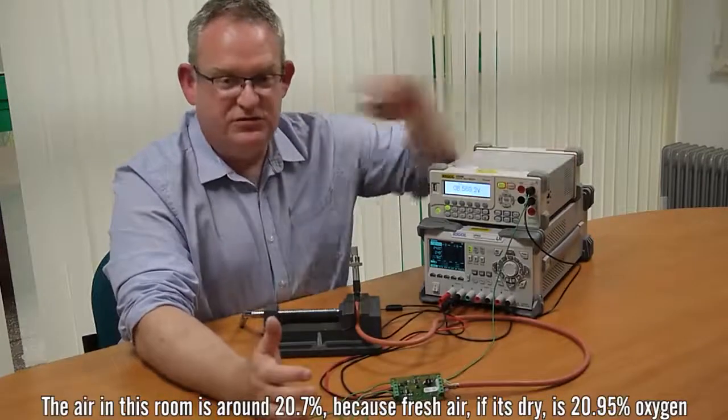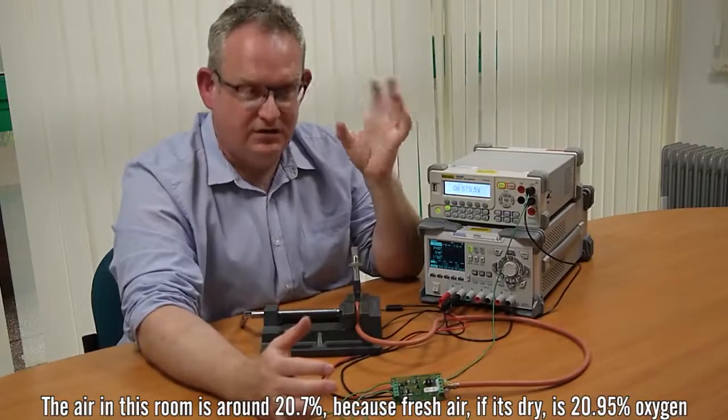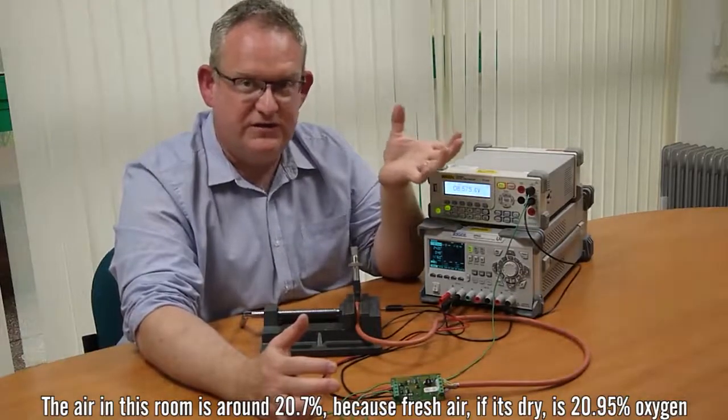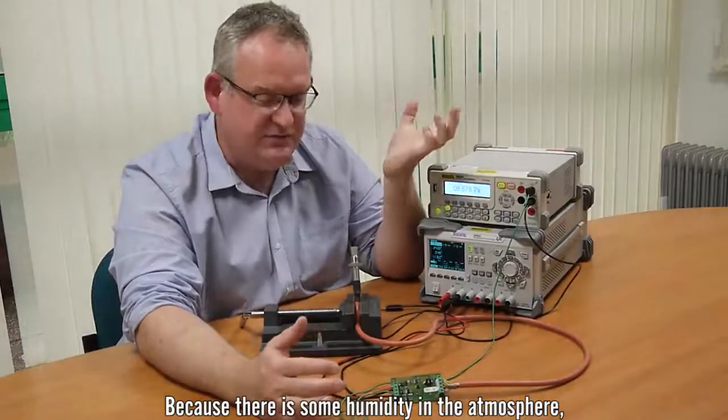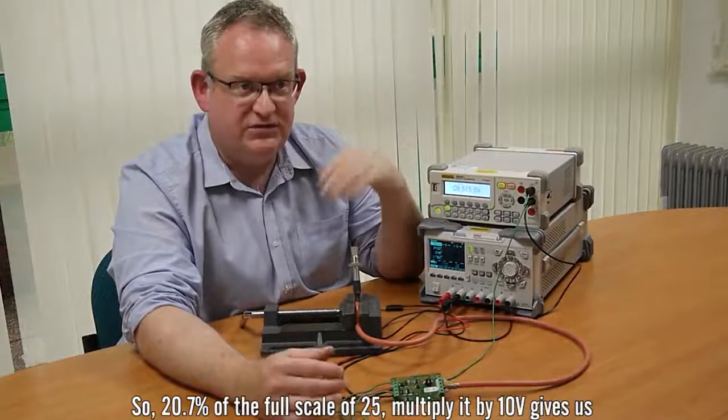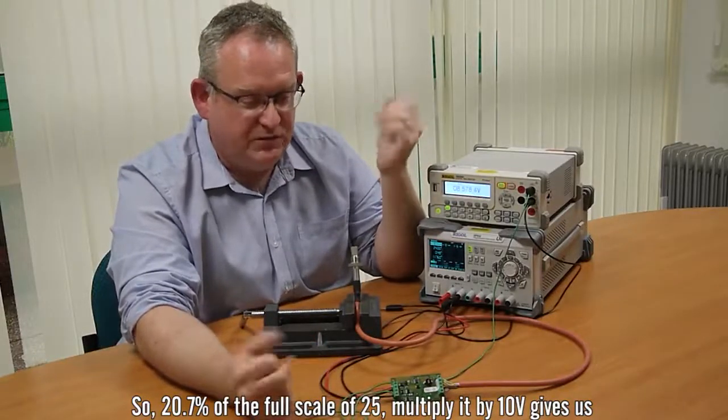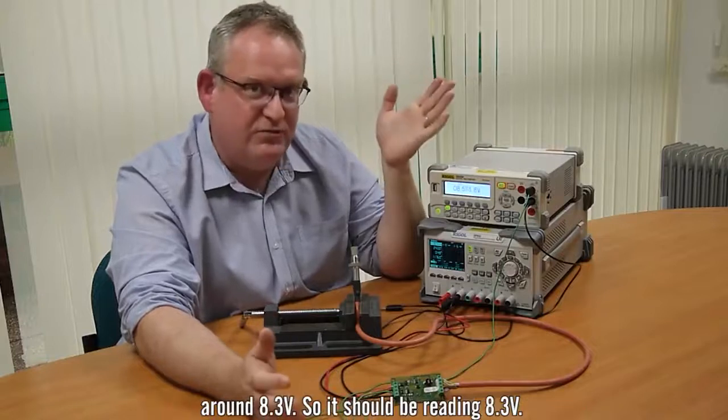The air in this room is around 20.7 percent because of course fresh air is, if it's dry, is 20.95 percent oxygen but because there's some humidity in the atmosphere it's always going to be a bit lower and typically it's 20.7 percent. So 20.7 percent of the full scale of 25 multiplied by 10 volts gives us around 8.3 volts.